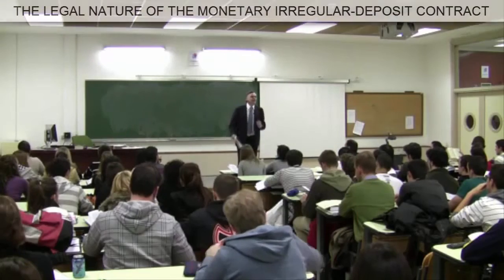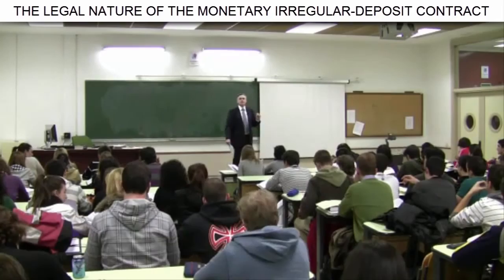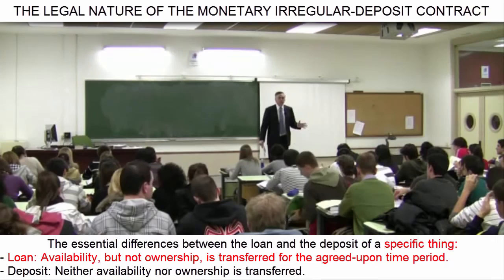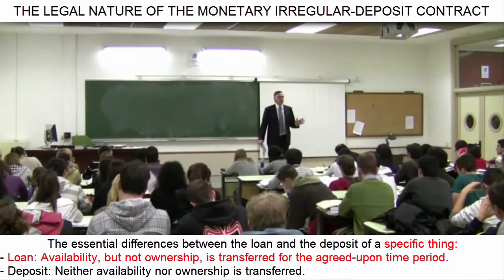Let us sum up. What differences exist between the loan and the deposit? In the loan, the availability of the item is transferred and is lost for the duration of the loan. For example, if I lend my car to someone, I lose the availability of the car.